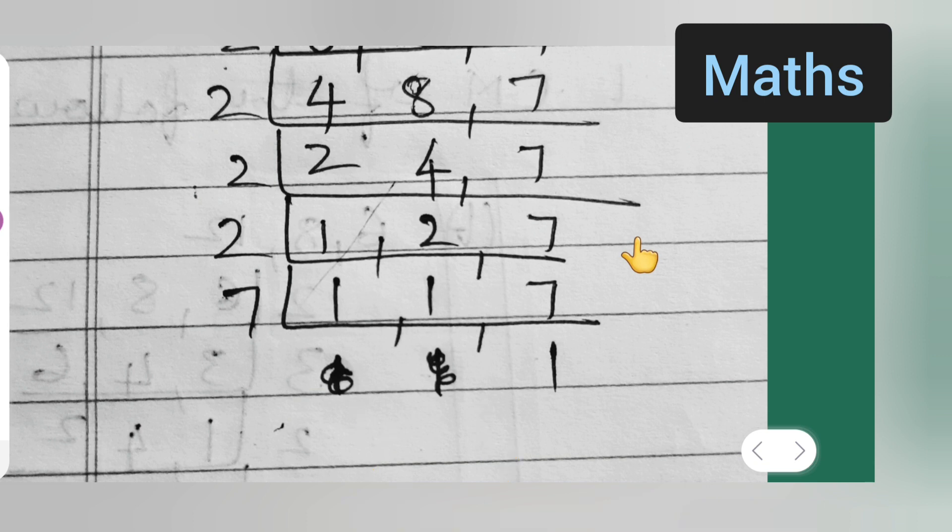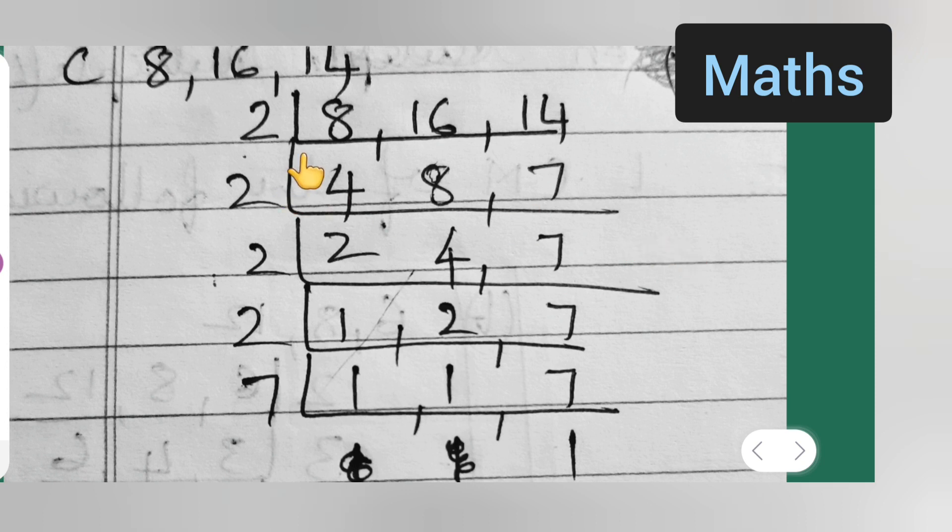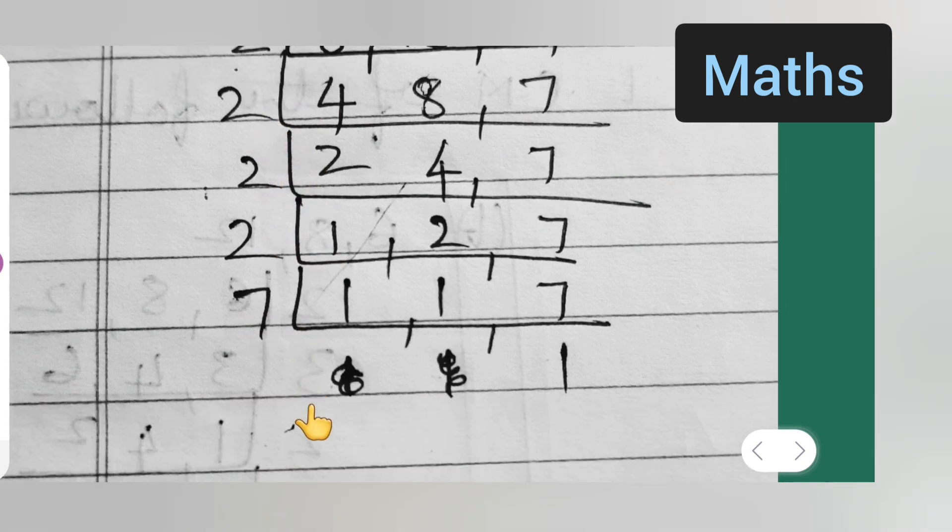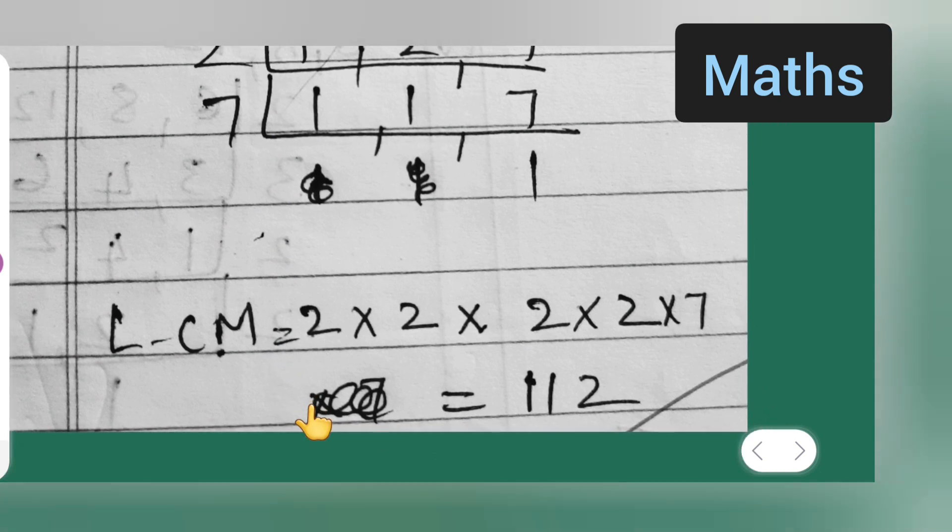So finally what you will have to do is you will have to multiply all these: 2 twos are 4, 4 twos are 8, 8 twos are 16, 16 sevens is how much? 2 twos are 4, 4 twos are 8, 8 twos are 16, 16 sevens is 112. That is the answer. So we found out the LCM.